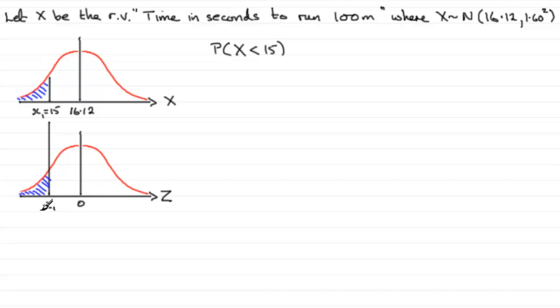So how are we going to get what z1 is? Well, we should know that any z value is given by the corresponding observed value minus the population mean μ, all divided by the standard deviation σ.